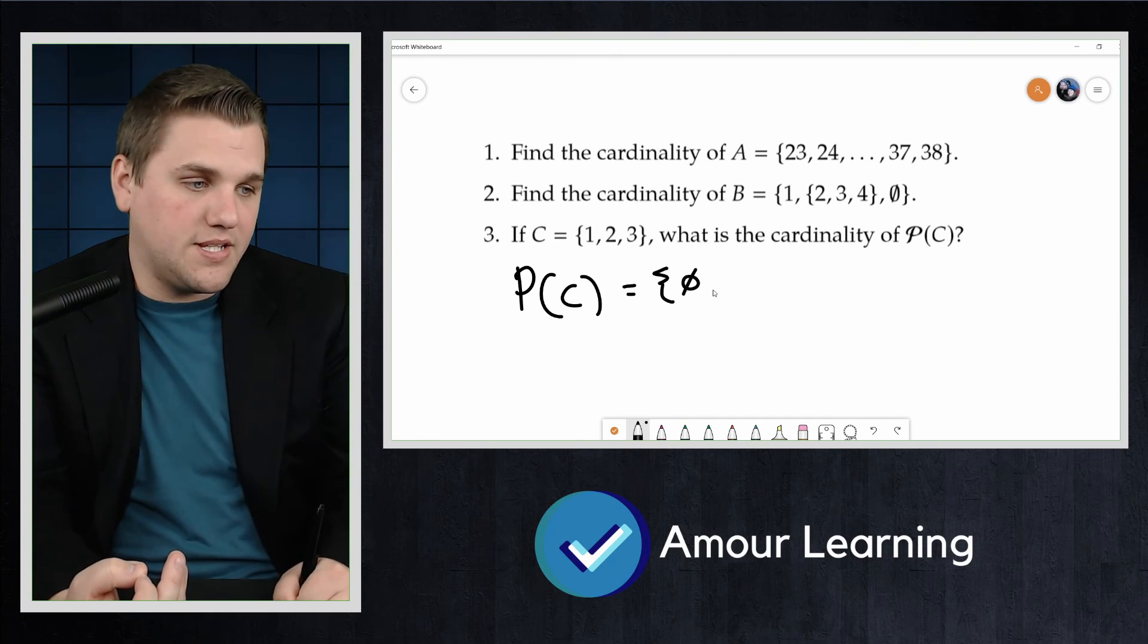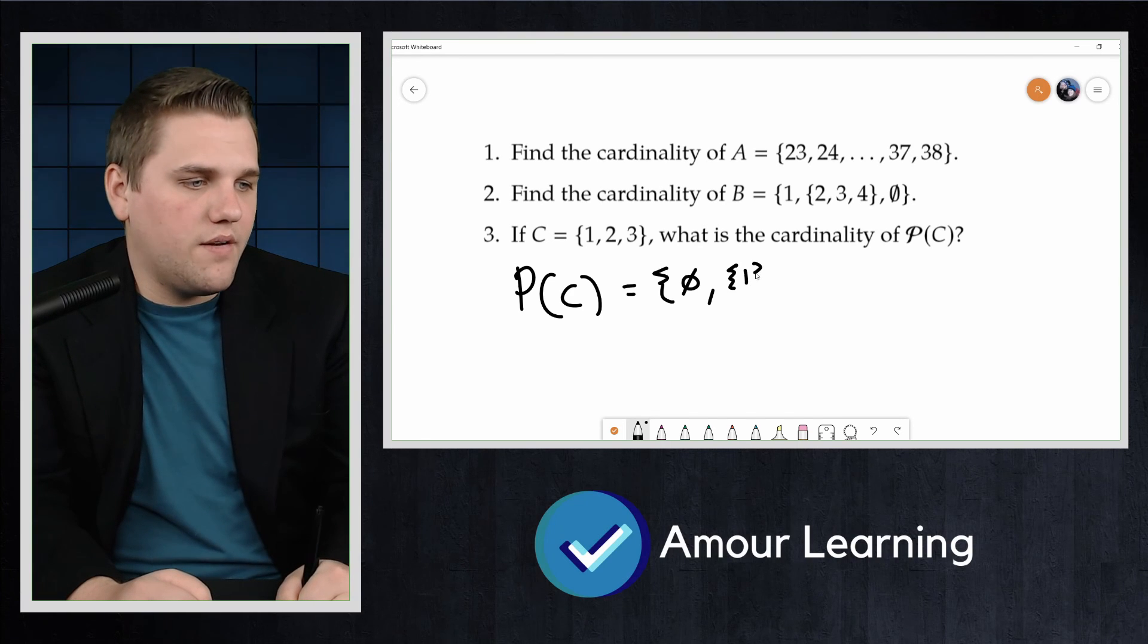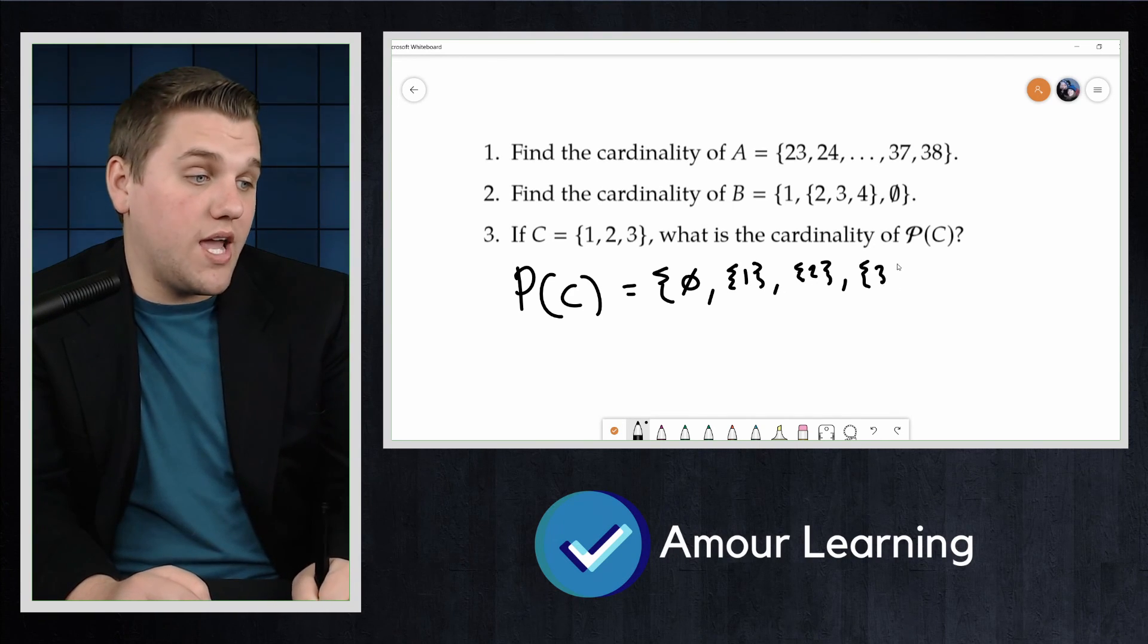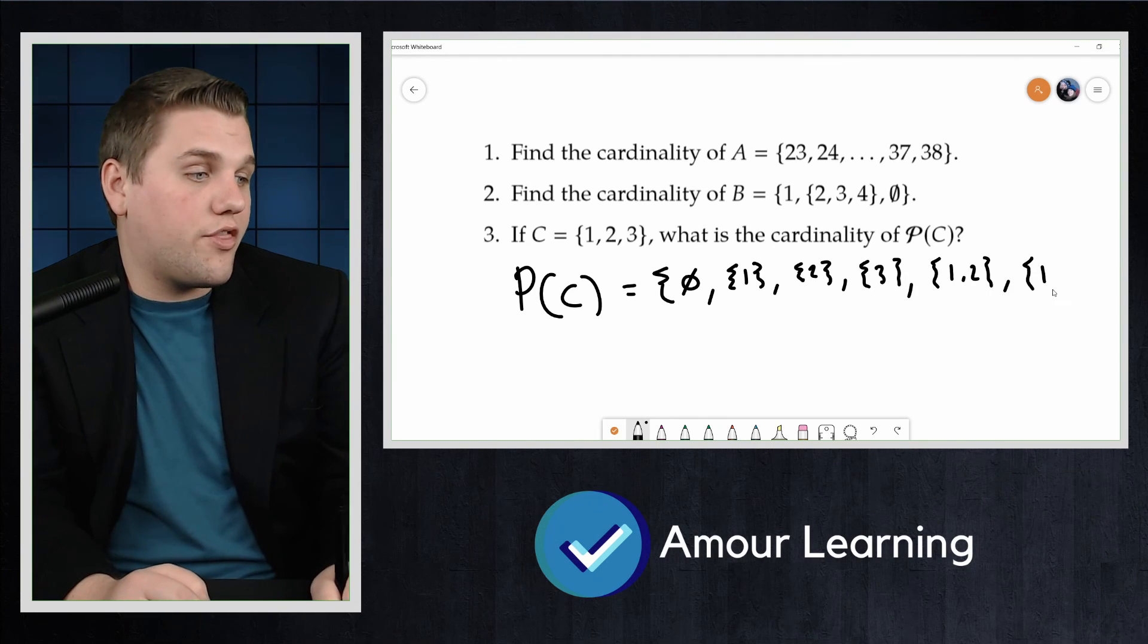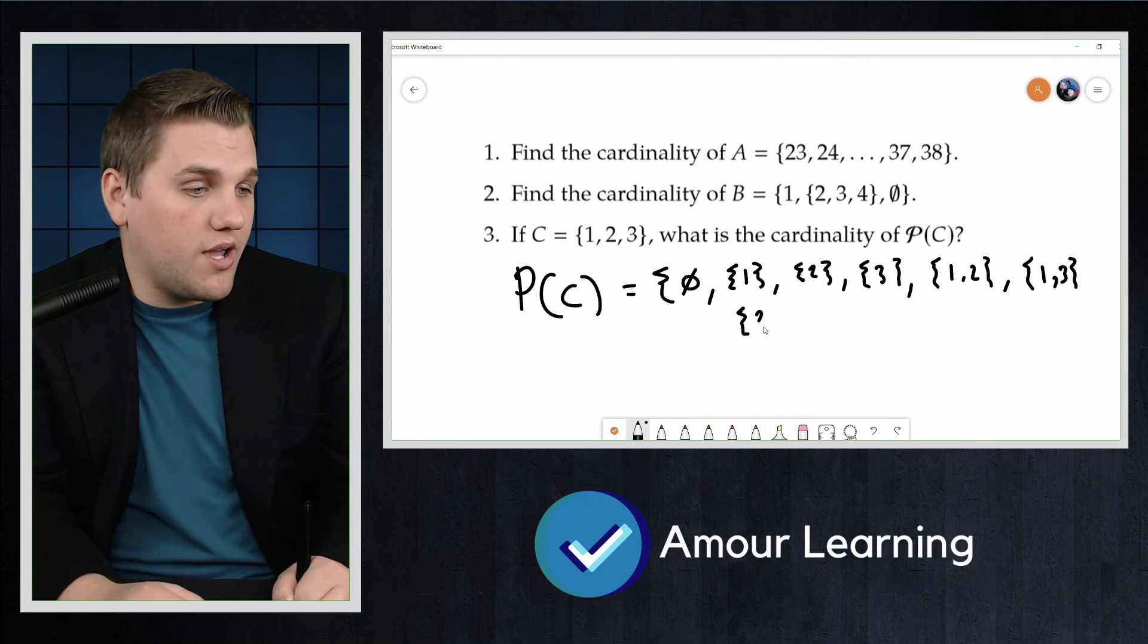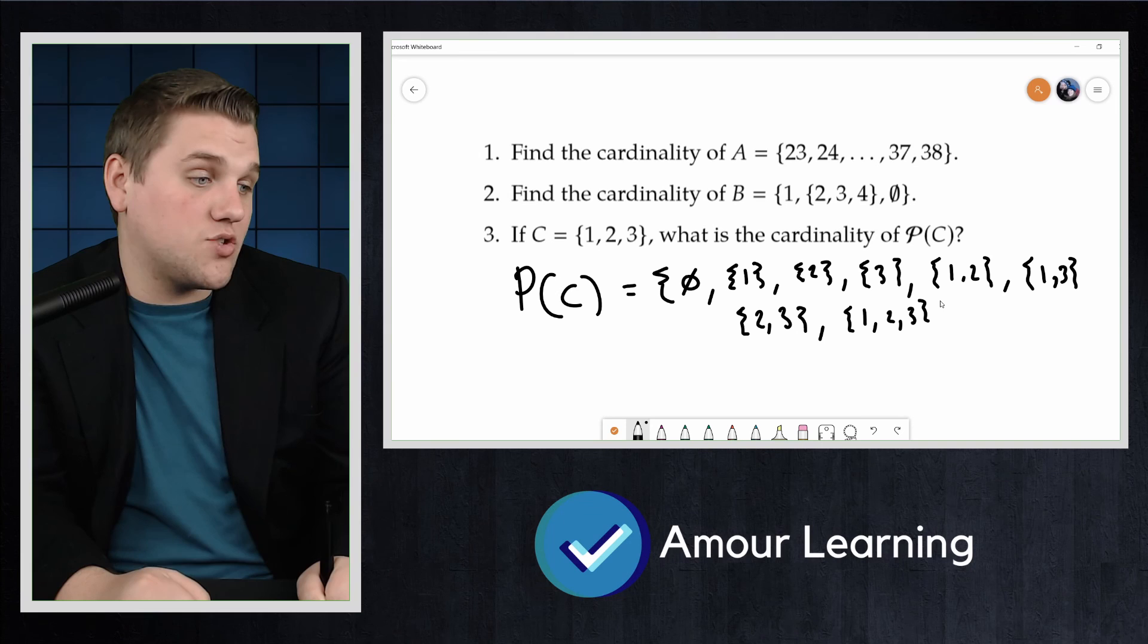So we can have the empty set. That's a subset of C. We could do just {1}. We could do just {2}. We could do {3}. We could do {1, 2}. We could do {1, 3}. We could do {2, 3}. And then we could do the entire set {1, 2, 3}. That's a subset of C as well.